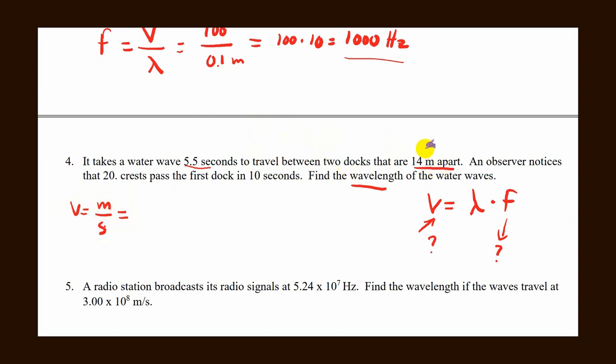We know that velocity equals meter per second, distance over time. Meters, we have 14 meters. Seconds, we have 5.5 seconds. This will give you 2.55 meters per second. So that's your velocity.